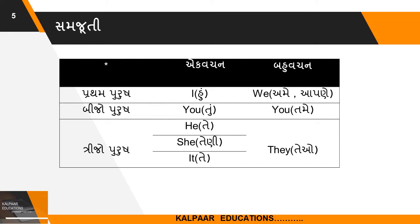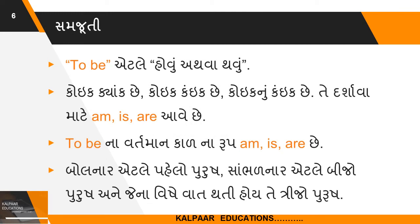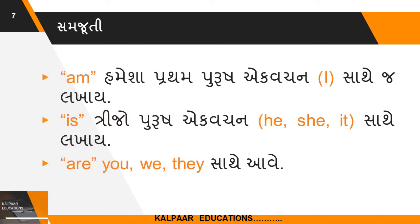સ્ત્રી જાતી માટે She, પશુ-પક્ષી અથવા નિર્જીવ માટે It આવે છે. ટુ બીના વર્તમાન કાળના રૂપ Am, Is, Are છે. Am હંમેશા પ્રથમ પુરુષ એક વચન I સાથે, Is ત્રીજો પુરુષ એક વચન He, She, It સાથે, અને Are - We, You, They સાથે આવે છે.